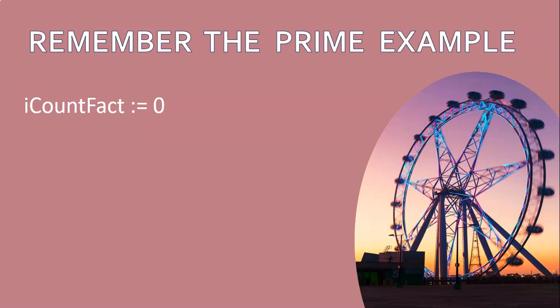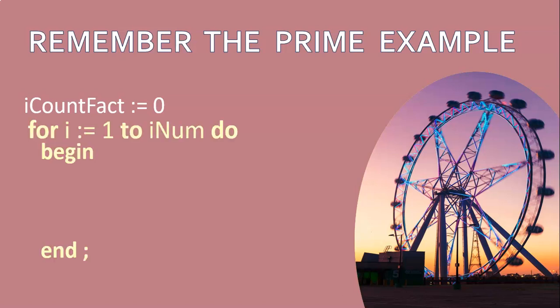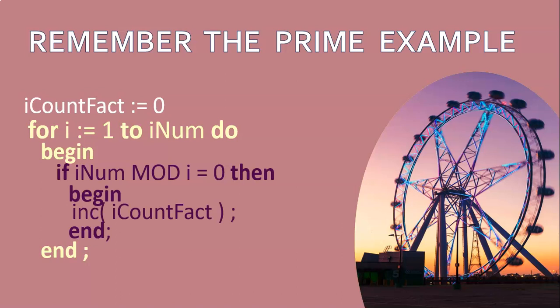We looped from one until the number we were checking. So if we want to check if five is a prime number, we check all the numbers from one to five - one, two, three, four, five - and check if all of those are factors. The way we checked it was by seeing if the i variable can be divided into that number without a remainder. So if i was one, we'd check if one can go into five without a remainder - yes it can. Can two go into five without a remainder? No it can't. Every time we found a value that went into i_num without a remainder, we increased our factor count.